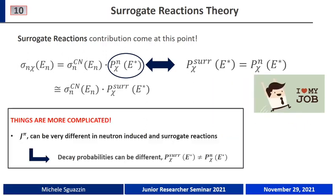The problem is that we cannot forget the conservation of quantities like angular momentum. The spin-parity distribution in the case of the compound nucleus produced via neutron-induced reaction and via surrogate reaction can be very different. This difference in the spin-parity distribution also has an impact on the decay probabilities, and we can find an important mismatch between the probability measured in the surrogate case and the neutron-induced case.